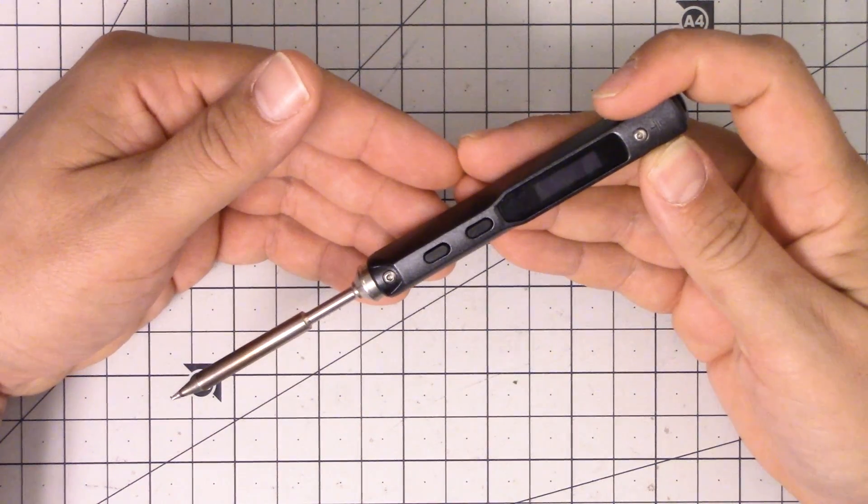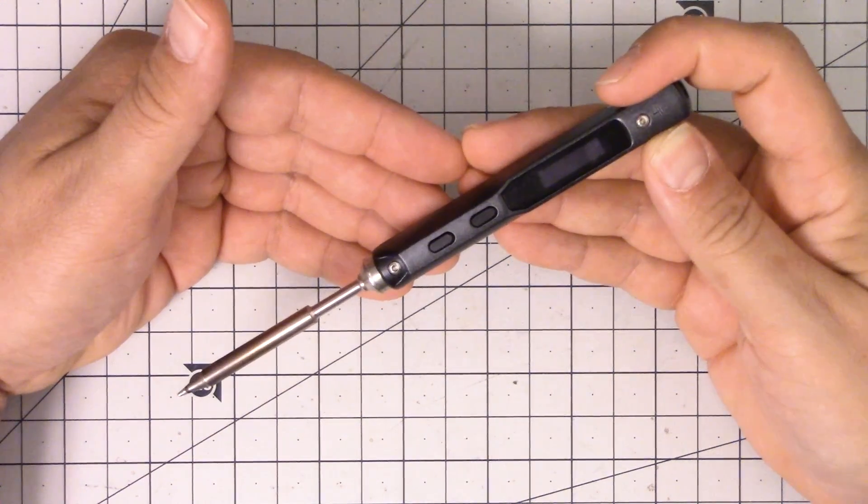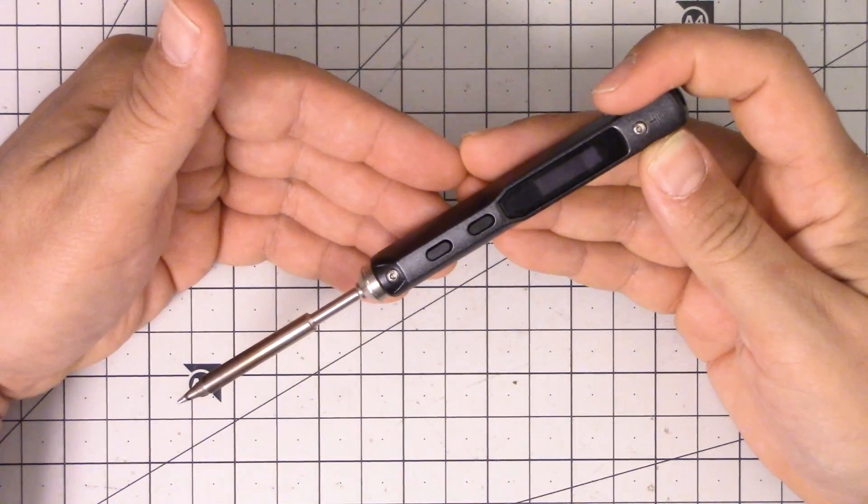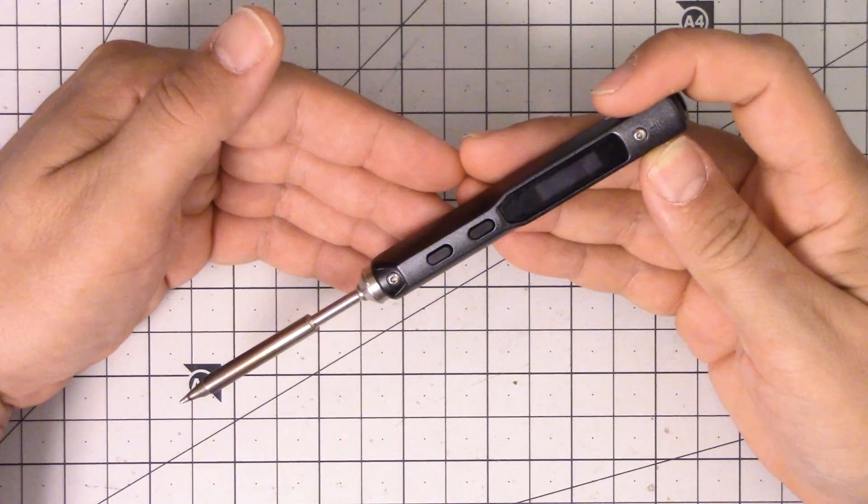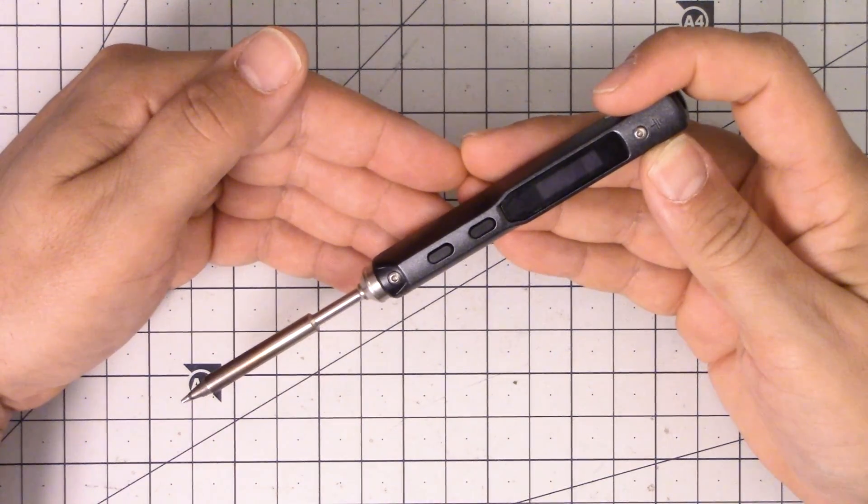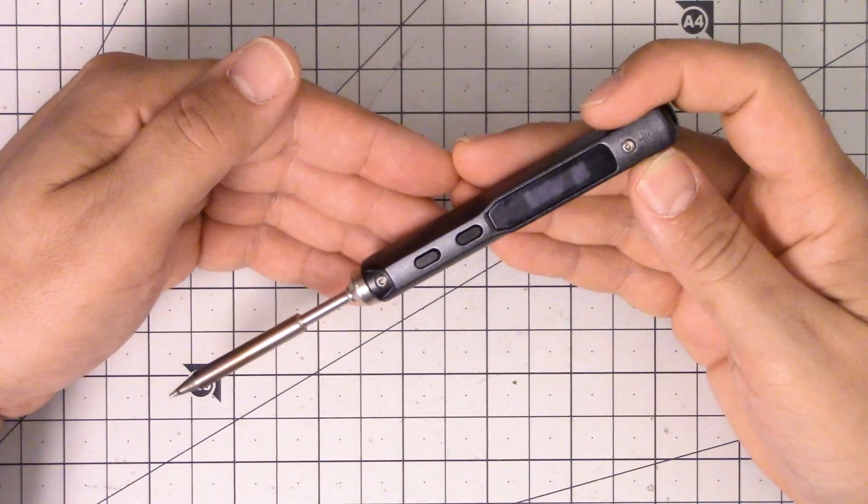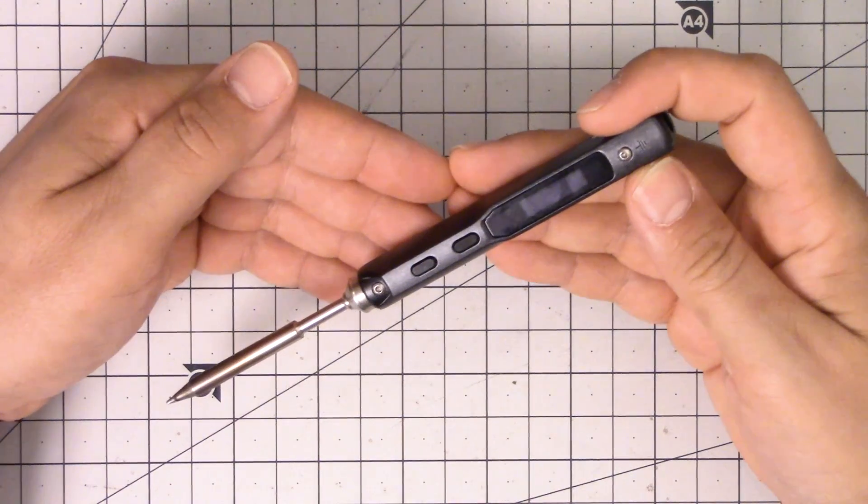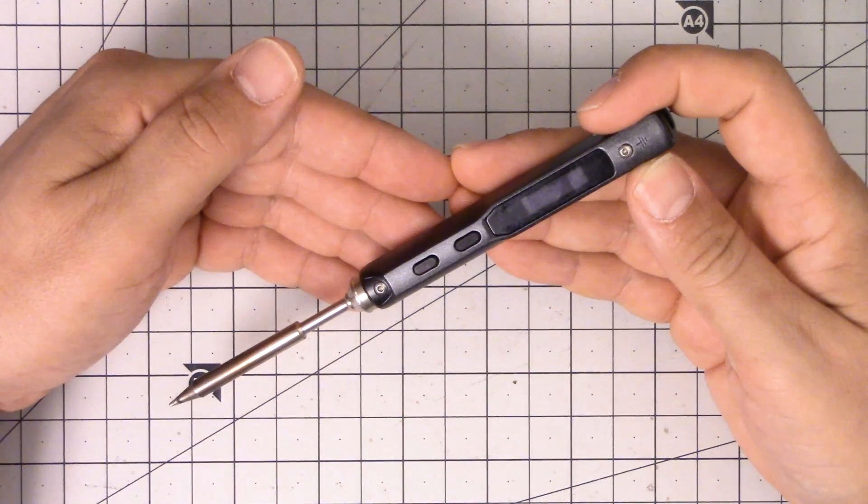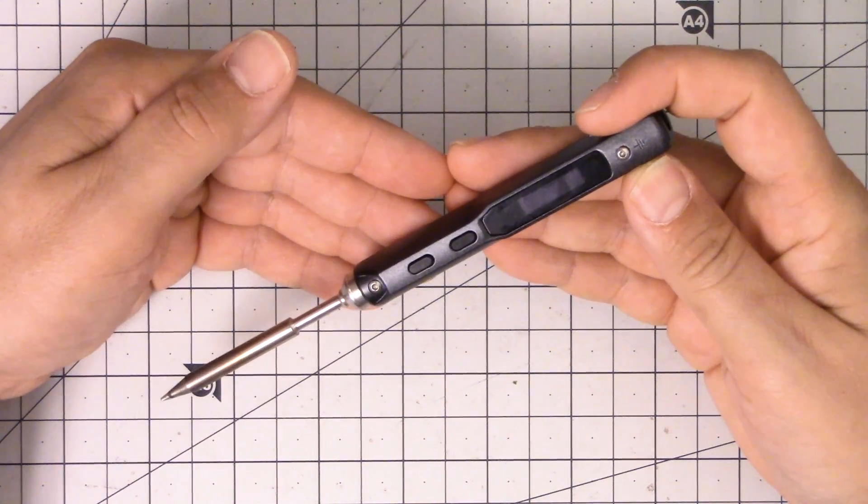If you compare that to a non-temperature controlled soldering iron, it essentially puts power through the tip, whether that power comes from electricity or from a gas flame, and the tip gets as hot as it gets. Number one, you have no feedback on how hot the tip is. When working with a gas iron, you essentially set the flame, try to solder a joint, and if it's too hot you smoke something, if it's too cold you smoke something. You adjust as you go, you don't have any feedback.